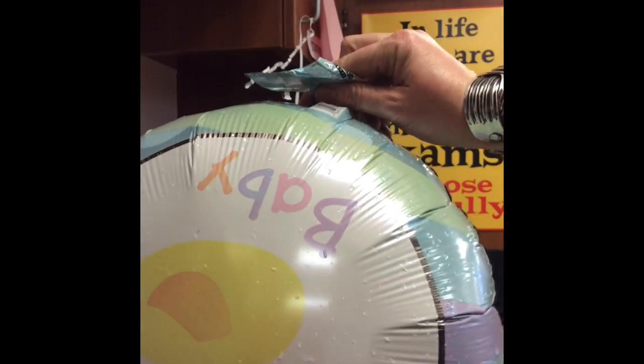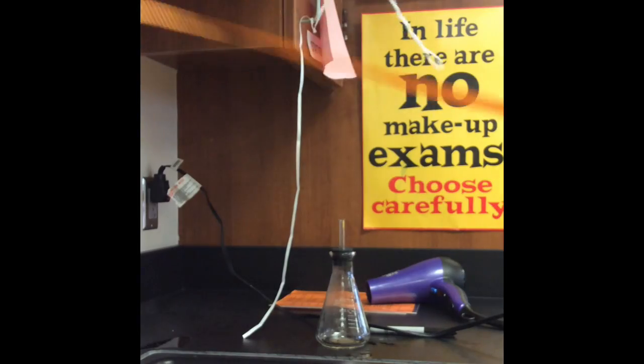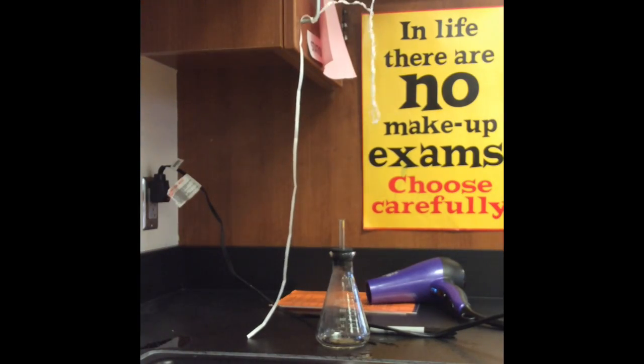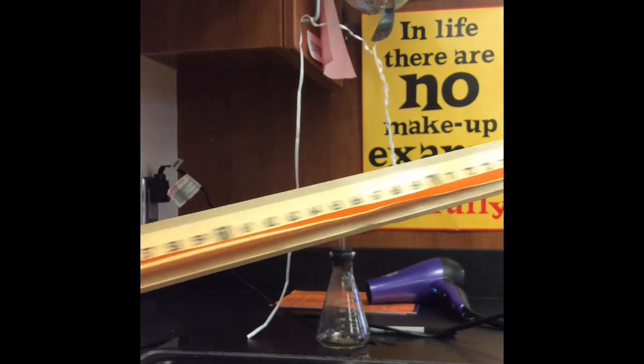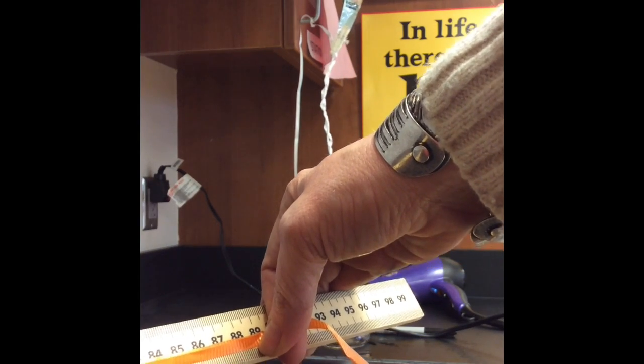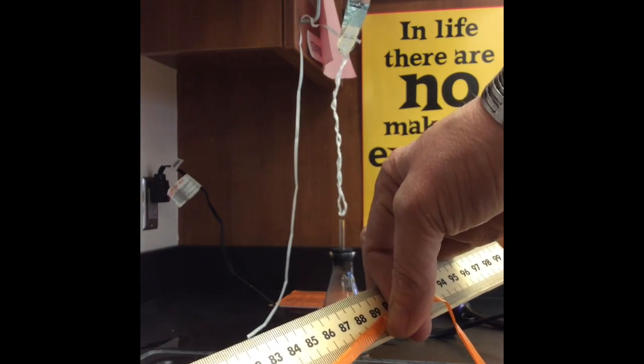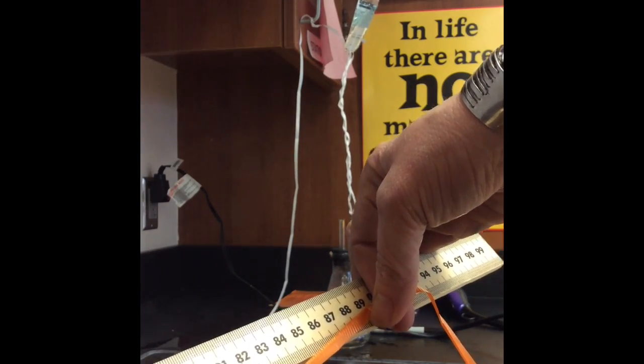We're gonna pretend that was two minutes and I'm gonna take the circumference again. This time on my handy dandy meter stick I find out that my circumference is about 89 centimeters. You should be able to figure out what happens when the temperature changed.